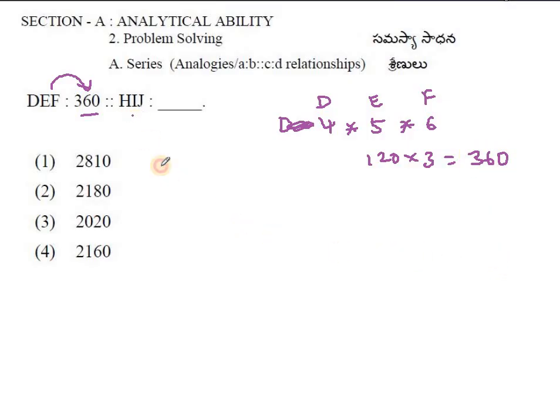Now for HIJ, what are the serial numbers starting from A? H is 8, I is 9, and J is 10. Using the same logic, we multiply 8 times 9 times 10. 10 times 9 is 90, times 8 equals 720.